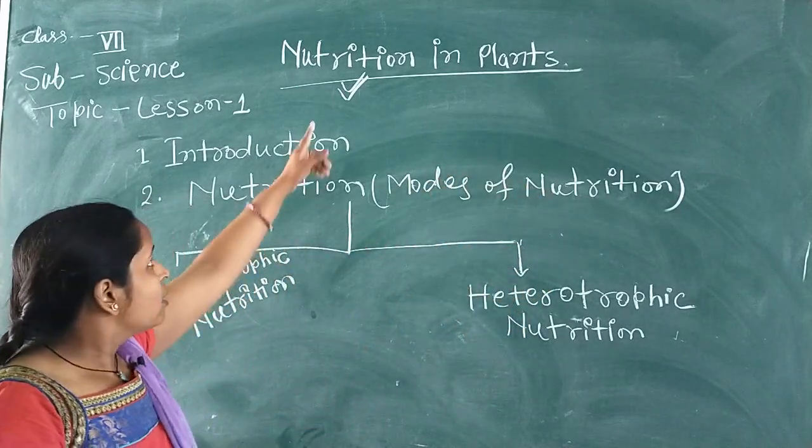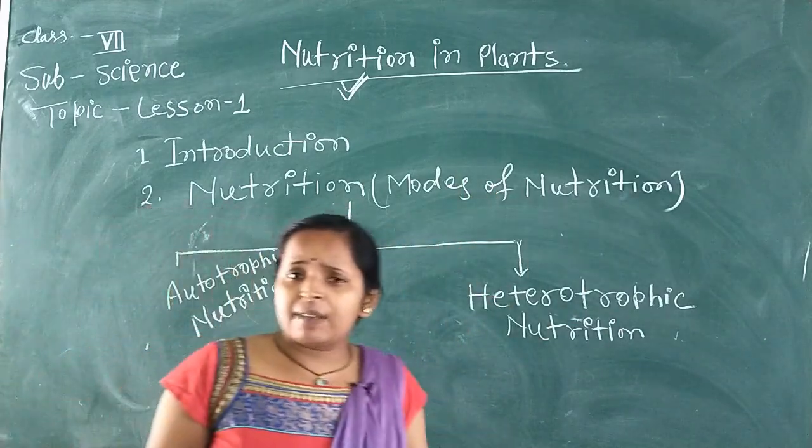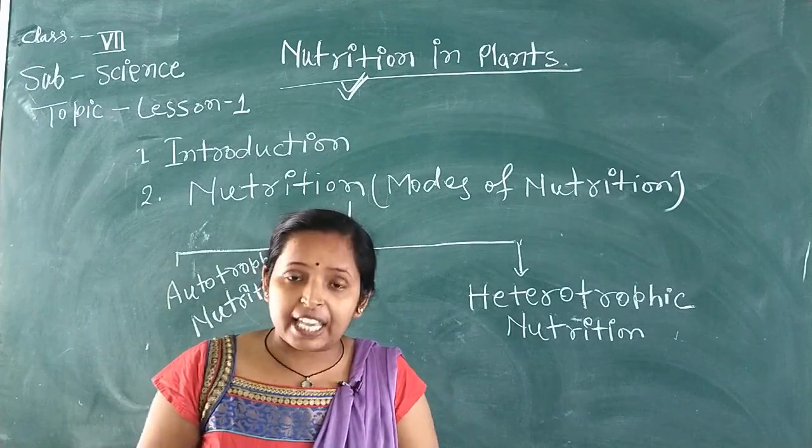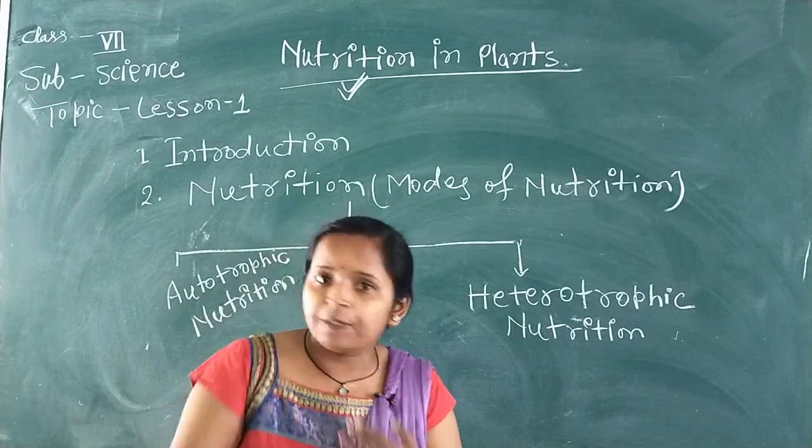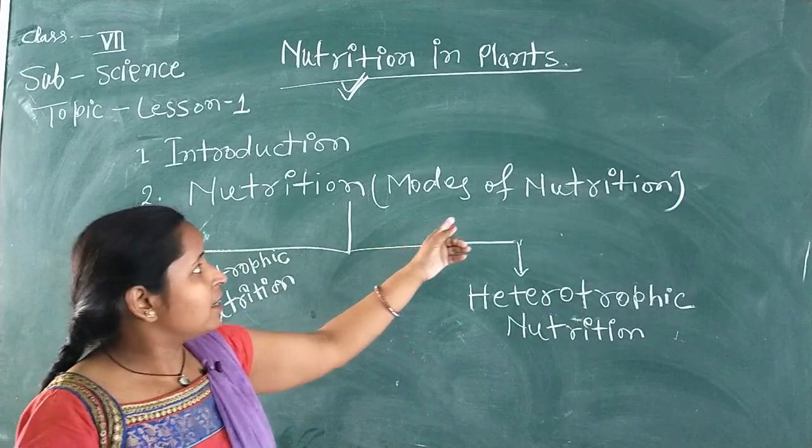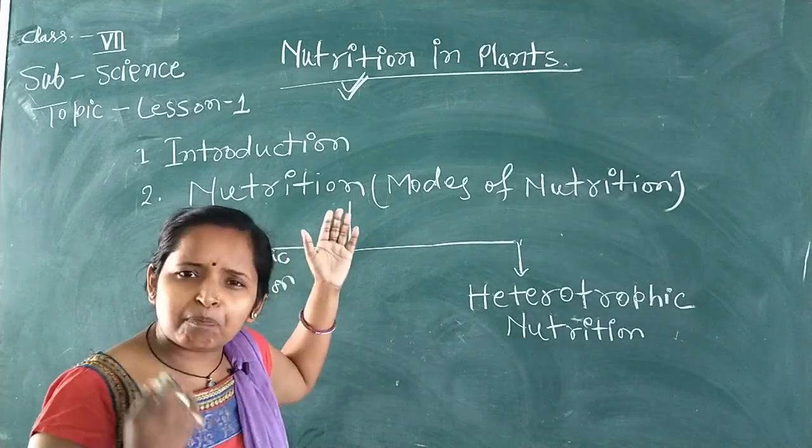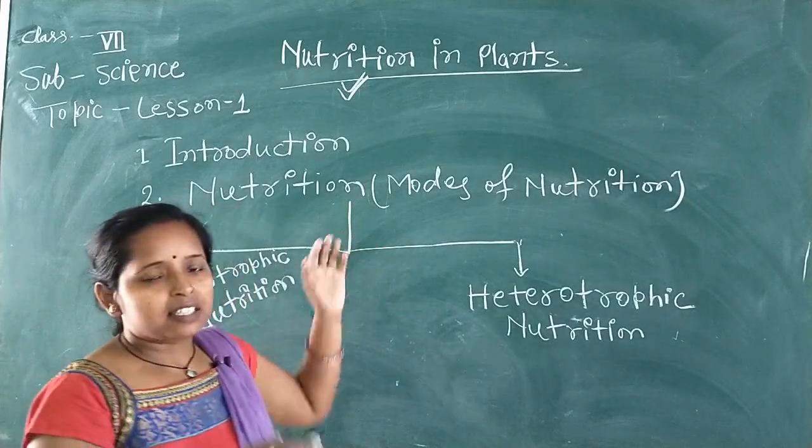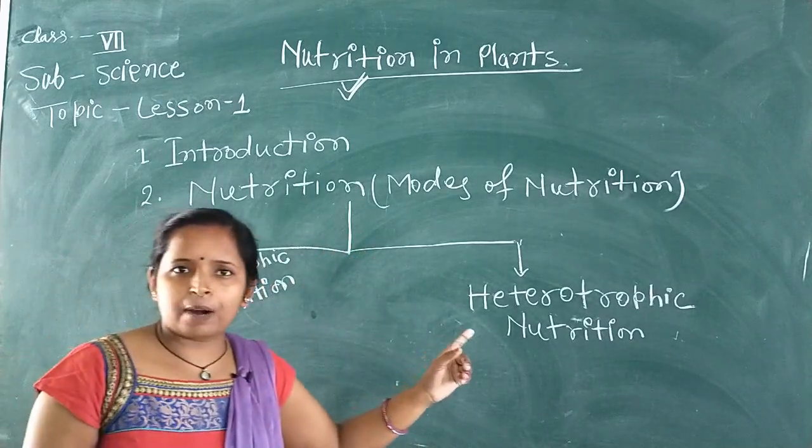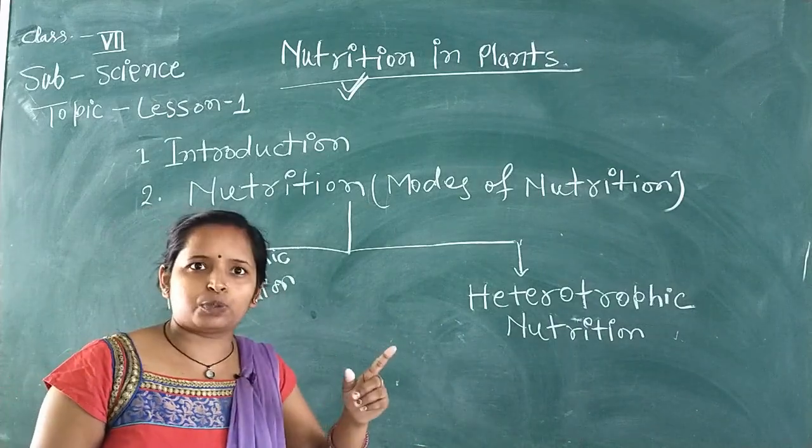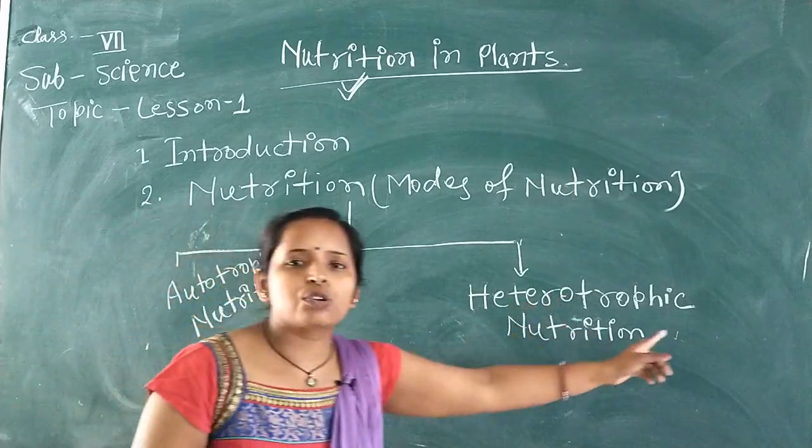Now you will know here, nutrition is divided into two groups. As we have studied, different types of organisms take in their nutrition in different ways. They take their food in different ways. So here it has been given modes of nutrition. Modes means the method of taking food, the way of taking food is different for everyone. Though they are living things, their method is different. Modes of nutrition are autotrophic nutrition and heterotrophic nutrition.